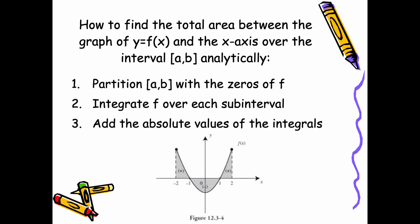Then we take the absolute values of these integrals and add them together. The ones that are above are already going to be positive. The one below, because we're taking the absolute value, will also become positive. We add all three together and get the total area.